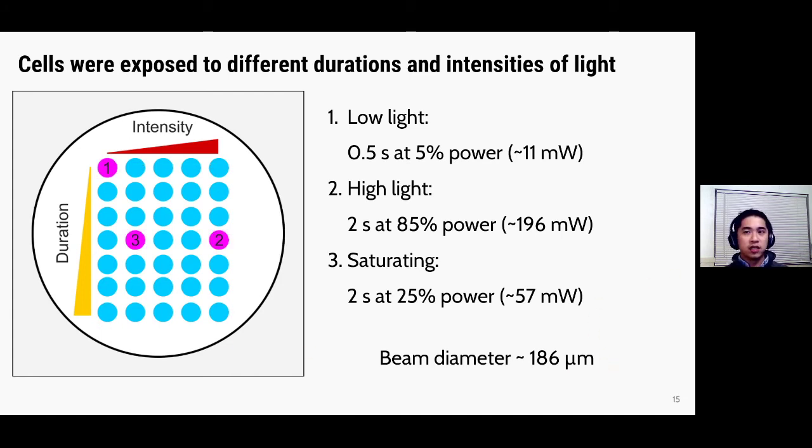So I'm going to describe the results that we have for three different representative conditions. The first is the low light case, where the cells were illuminated for half a second at 5% laser power, which corresponds to about 11 milliwatts, and we're using blue light here. In the second case, which I'm going to call the high light case, the cells were irradiated for two seconds at 85% laser power, which corresponds to about 196 milliwatts. And then finally, in the saturating case, cells were exposed for two seconds at 25% laser power, which corresponds to about 57 milliwatts.